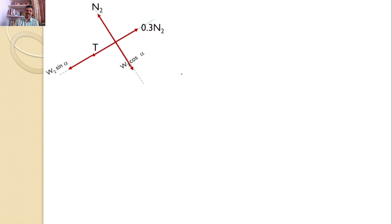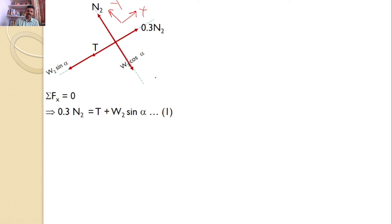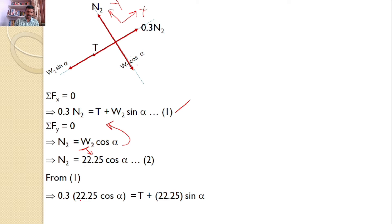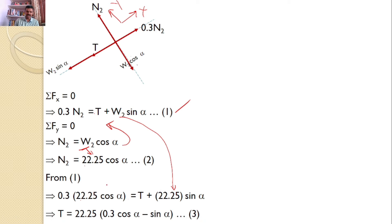Applying equilibrium: sigma Fx = 0 gives 0.3 N2 = T + W2 sin α (equation 1), and sigma Fy = 0 gives N2 = W2 cos α. With W2 = 22.25 N, we get N2 = 22.25 cos α. Substituting back into equation 1: 0.3 × 22.25 cos α = T + 22.25 sin α, so T = 22.25 (0.3 cos α − sin α).